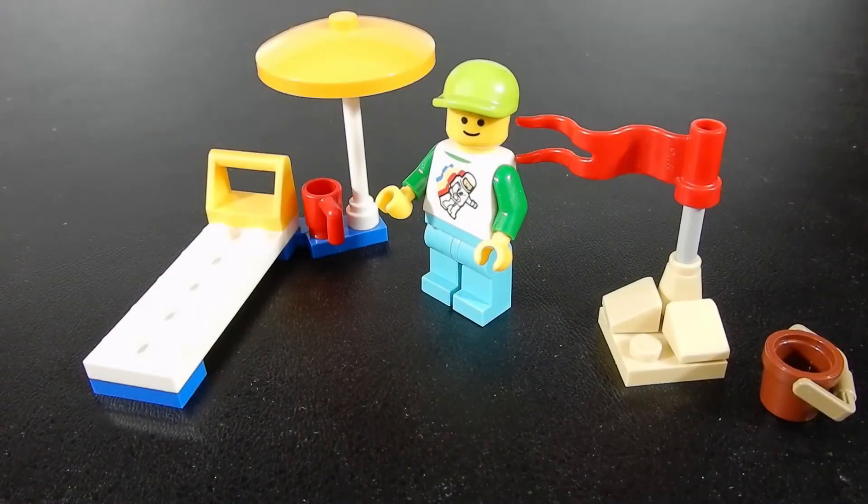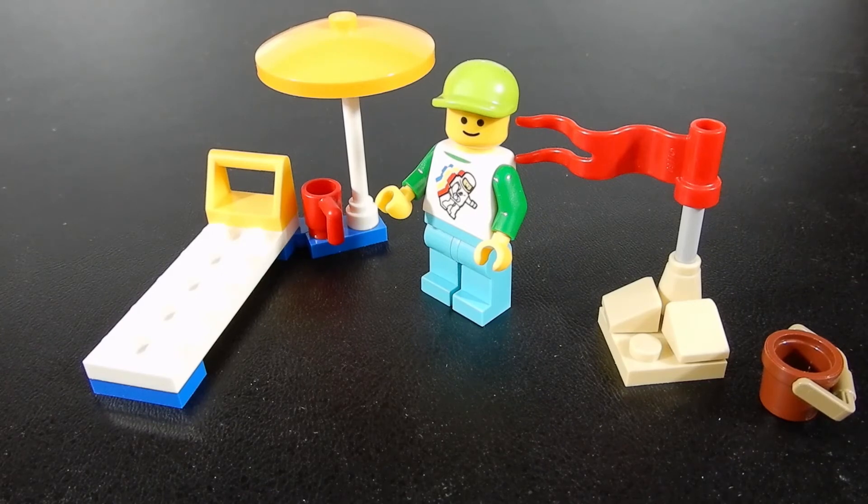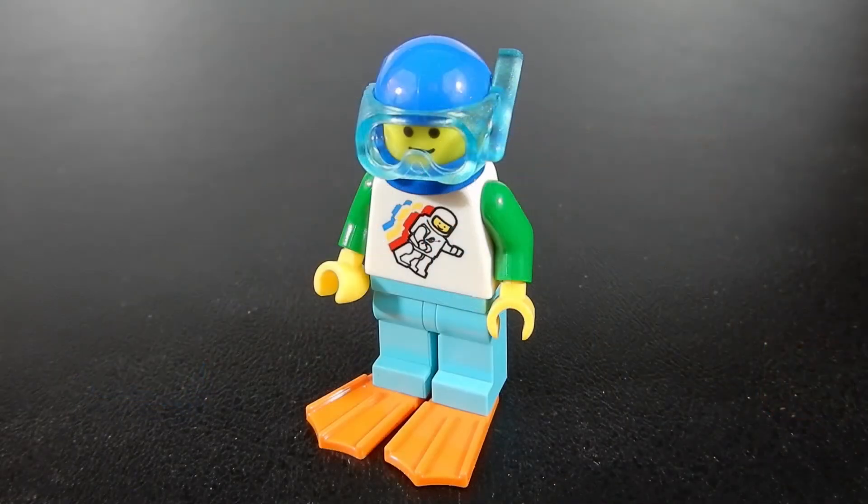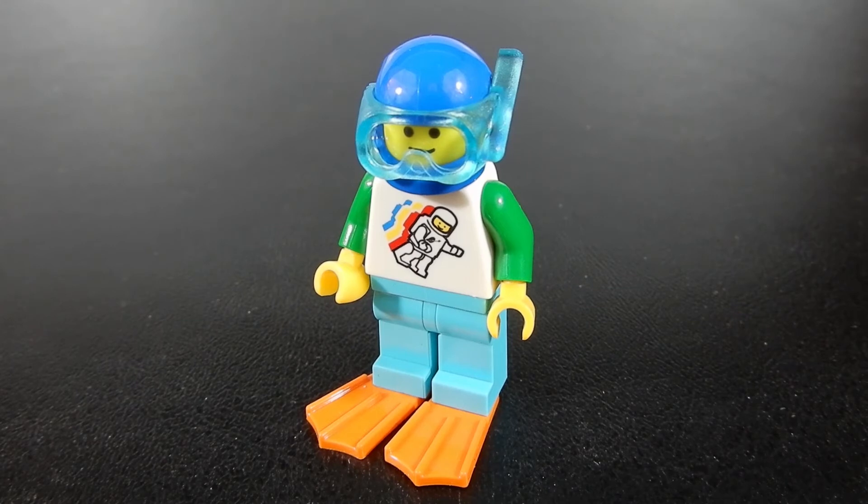He also enjoys a day at the beach with a lounge chair and an umbrella. He's got a little red coffee mug to hold a beverage. Looks like he just built a little sand castle, and he's got a bucket there to help him do that.